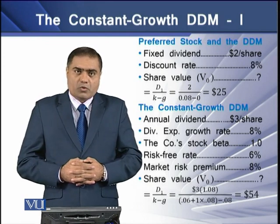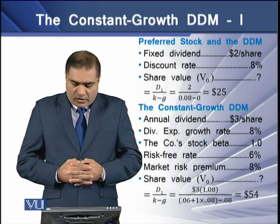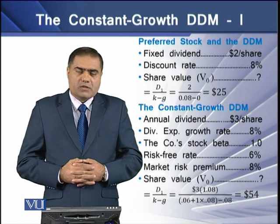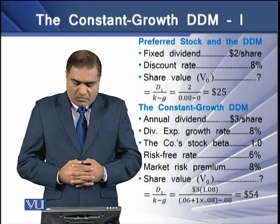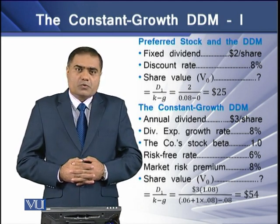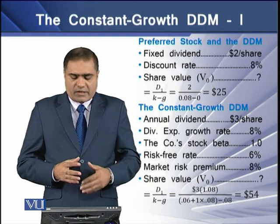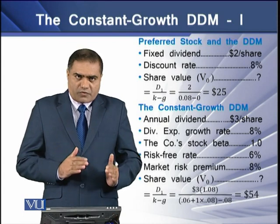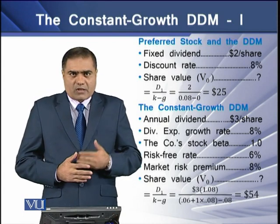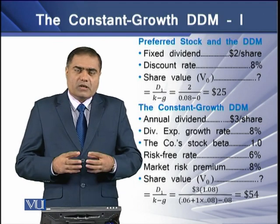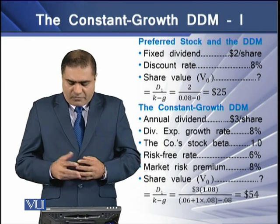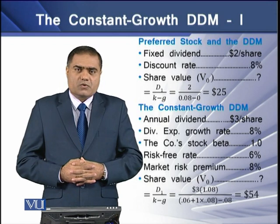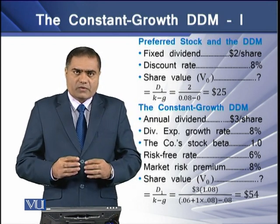The second example is the constant growth model for common stock. We have an annual dividend of $3 per share, an expected dividend growth rate of 8%, a stock beta of 1, a risk-free rate of 6%, and a market risk premium of 8%. To determine the share value V0, we use D1 over K minus G, where D1 equals 3 times 1.08. The required rate of return K is determined using CAPM, giving a resulting V0 of $54.